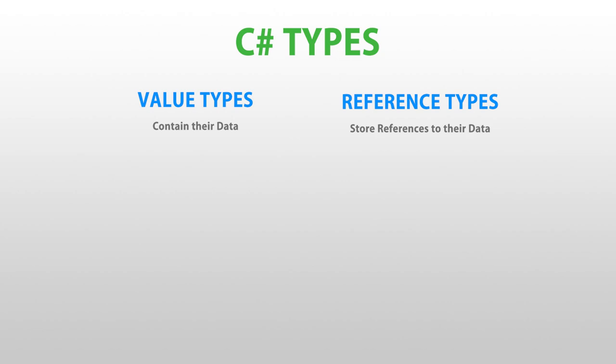An example of value types are simple types, so numeric values like ints or floats; enums and booleans are all value types. Reference types are classes and objects; however, structs are value types.